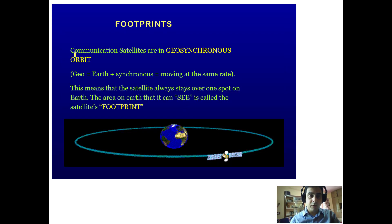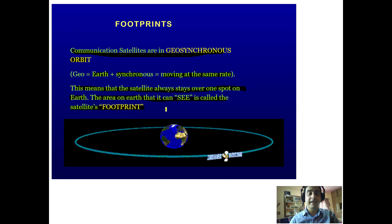Communication satellites have a geosynchronous orbit — 'geo' means earth and 'synchronous' means moving at the same rate. So the satellite moves at the same rate as the earth, meaning it always stays over one spot. The area on the earth that it can see is called the satellite's footprint — for example, if it always focuses on the Indian subcontinent, that area is its footprint.